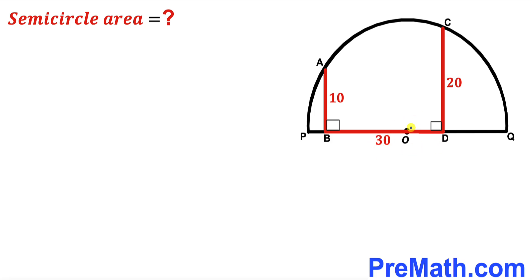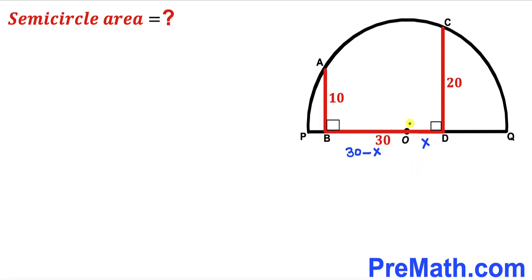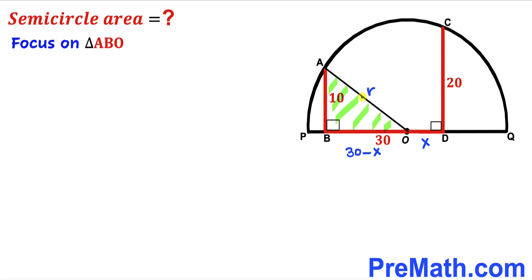I'm going to label the small segment OD as x, so the segment BO must equal 30 minus x. Now I'm going to connect the center O with point A. We can see that AO is the radius of this semicircle, so I'll label it as lowercase r.